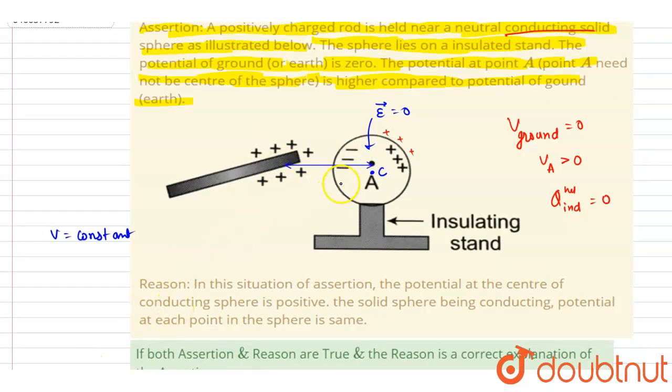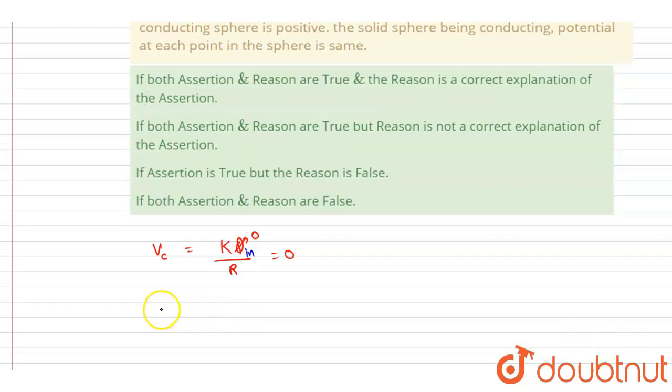And because of the rod which is kept at a distance of something r, it will be something, right? So if you see the potential because of this rod, let's say it is V naught. It will be k times the charge on the rod by r square. That is positive certainly.